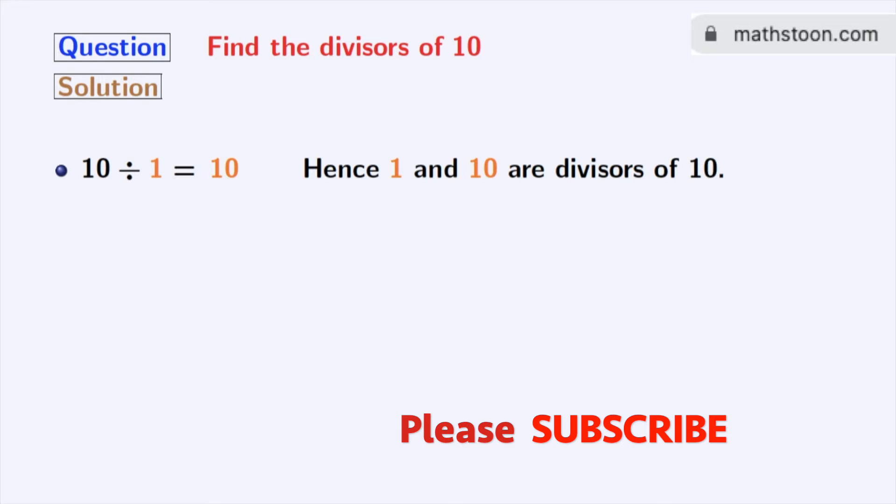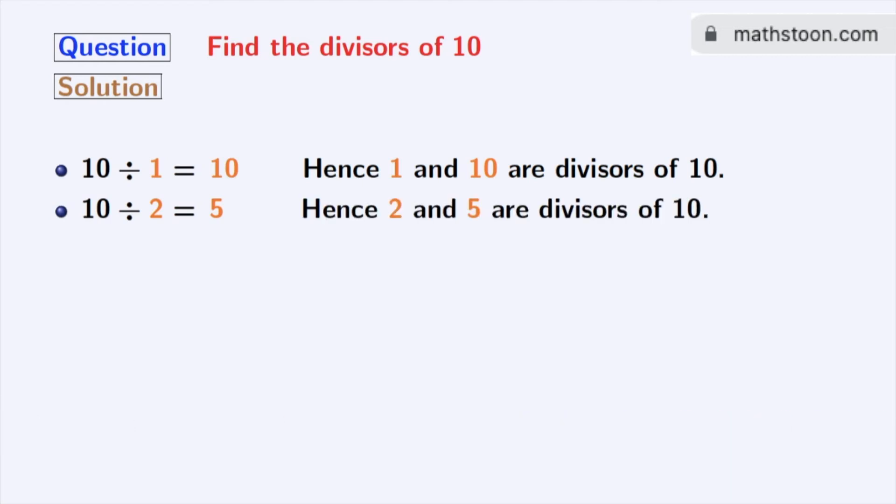If you try for 2, we can see that 10 divisible by 2 is equal to 5. Hence, 2 and 5 are the divisors of 10.